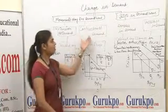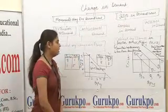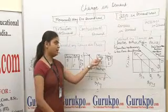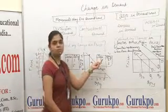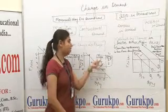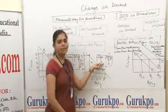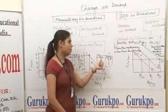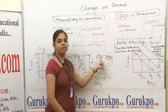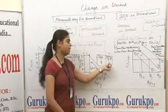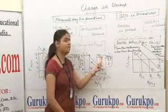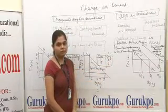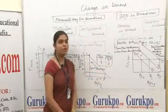In contraction of demand, when our price is 1 and it increases to 5, the quantity falls. When our price is 1, our quantity is 5. When price increases, our quantity falls to 1. This is the contraction situation.